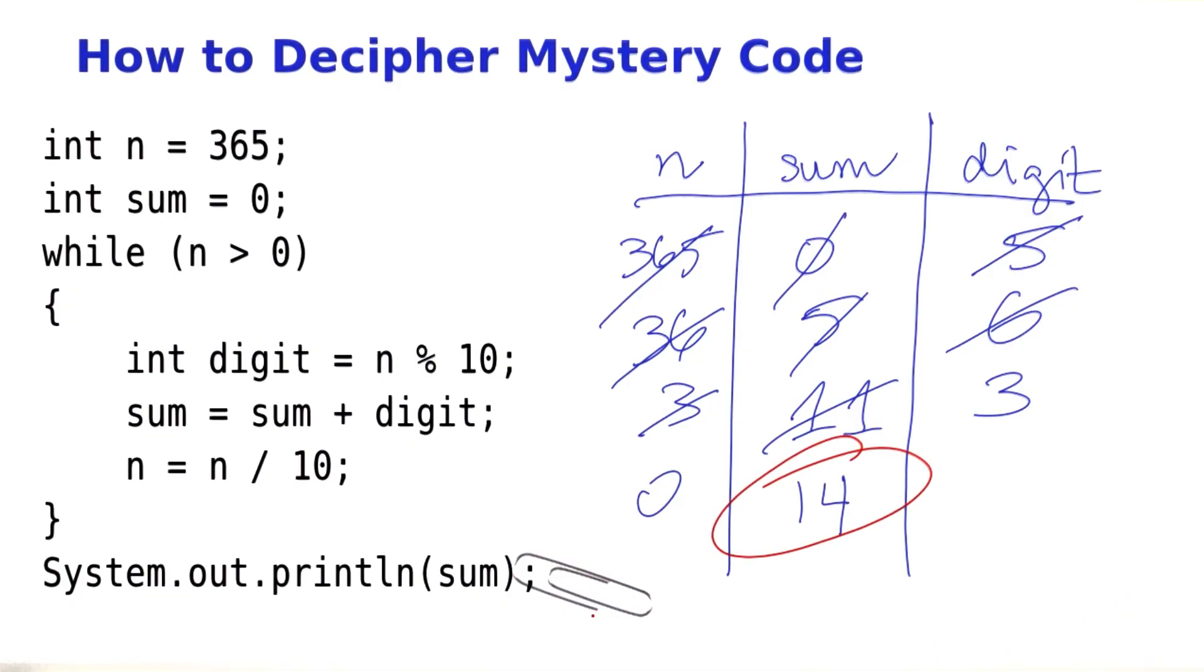And what are we printing? We're printing 14. Okay, what was 14? Well, we've computed all of the digits of the number 365. 3, the 6, the 5. And we've computed the sum. 14 is the sum of the digits.